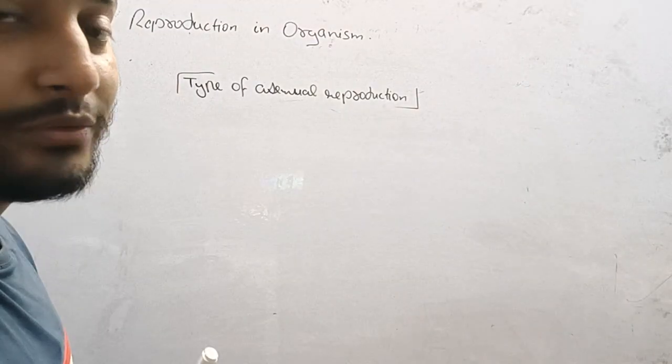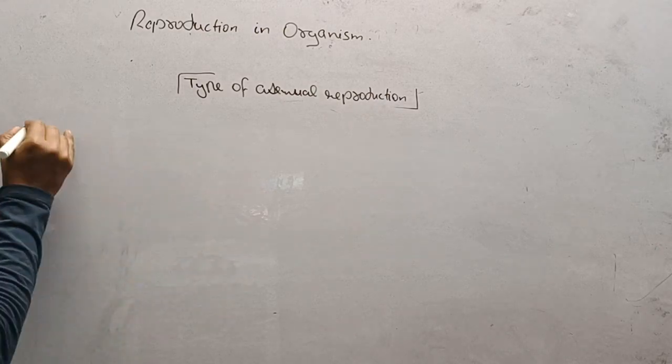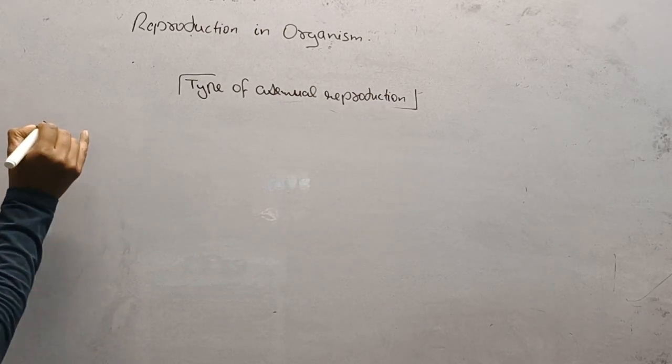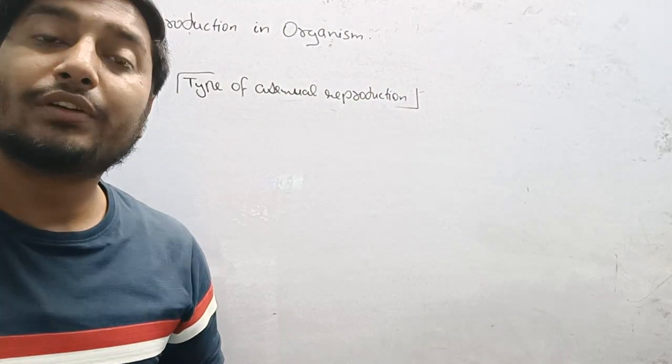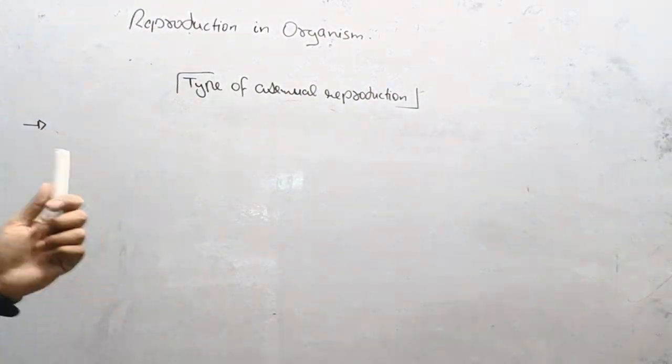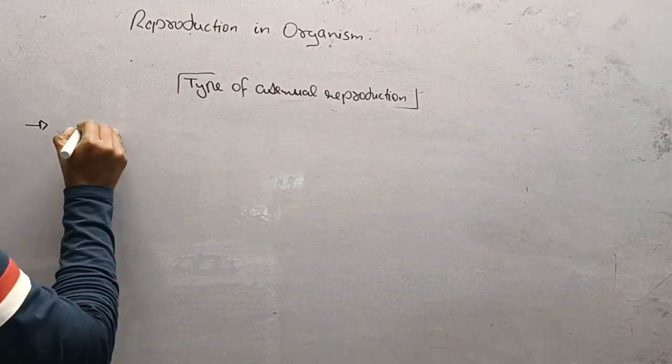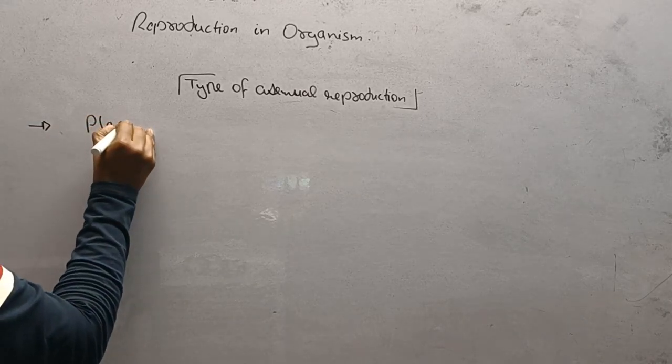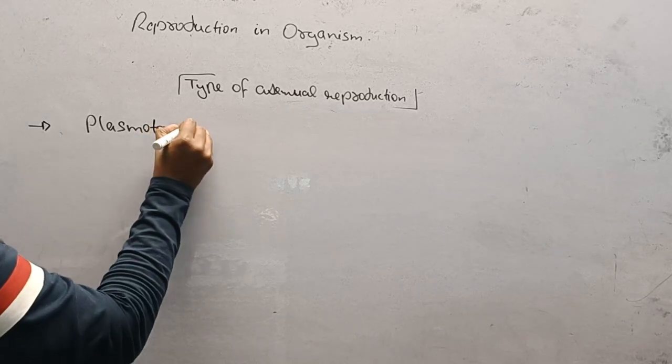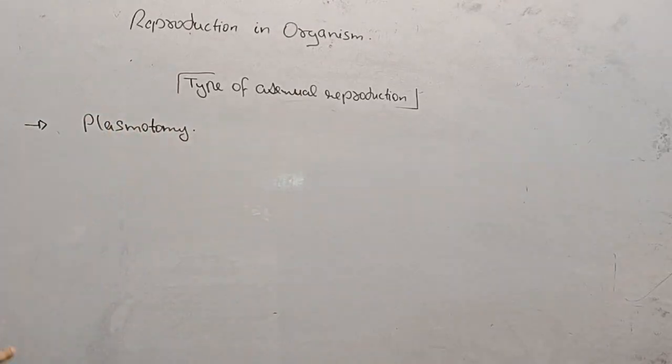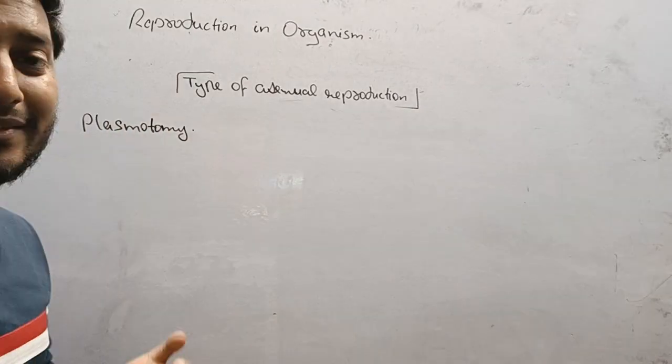Welcome you all to another lecture of asexual reproduction. Under this process, we have already discussed budding, regeneration, and fragmentation. Now we will discuss plasmotomy, which is a very complex process.